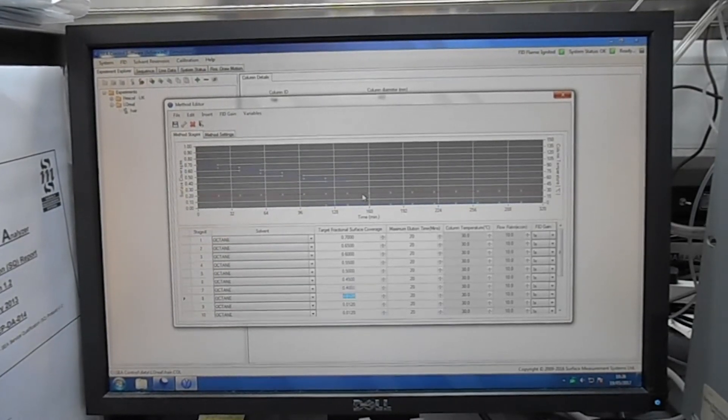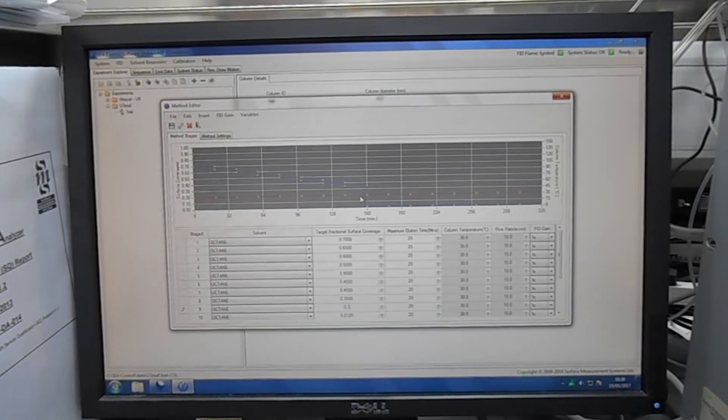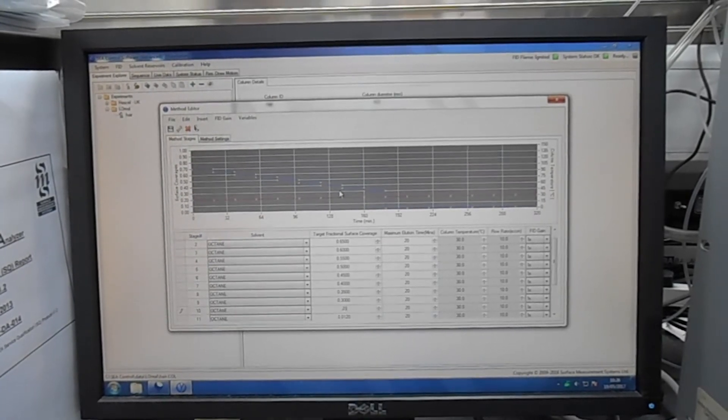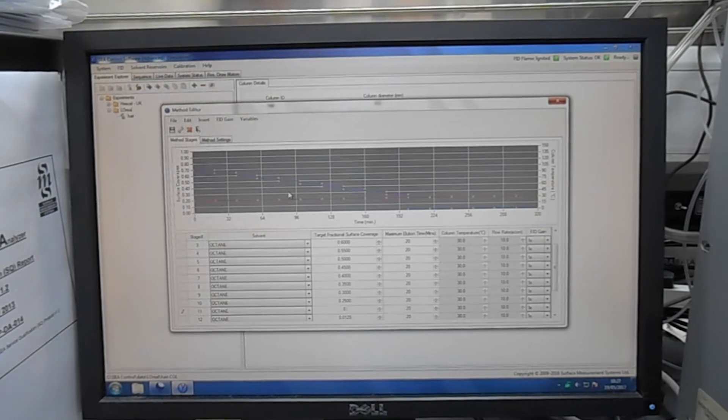So right now I'm generating a method with different points of my isotherm, only using one single component.